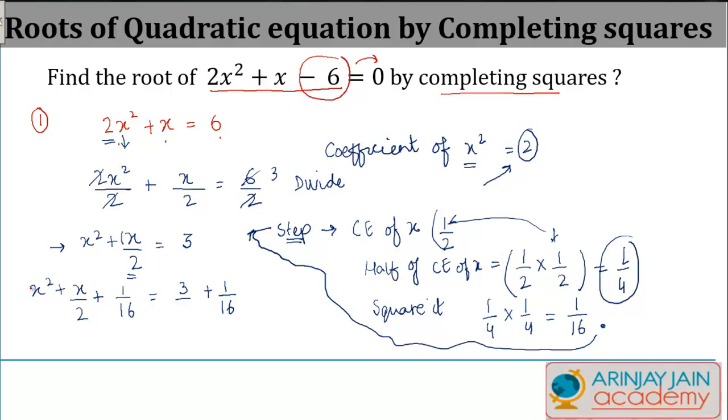Now if you carefully watch this, this can be written as (x + 1/4)². The idea is we need to convert this into some form of square. How do we do that? We know the formula: (a+b)² = a² + b² + 2ab.